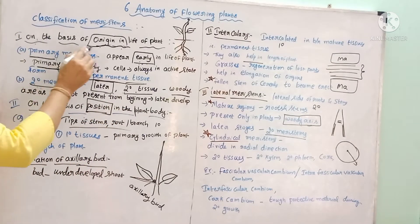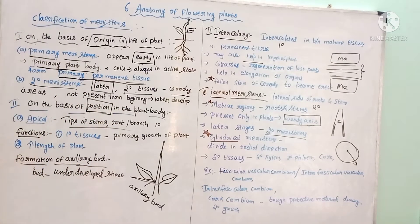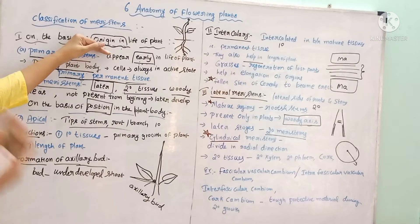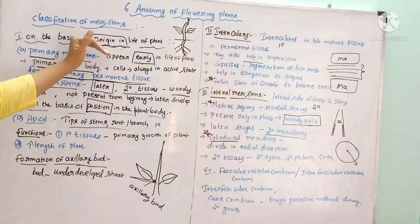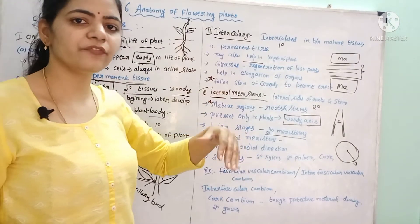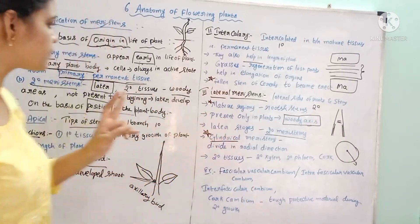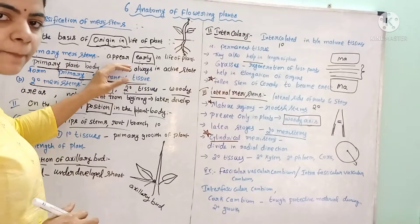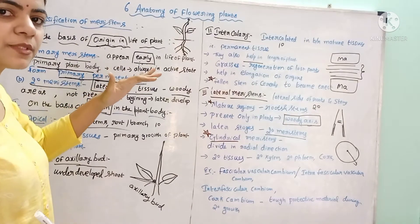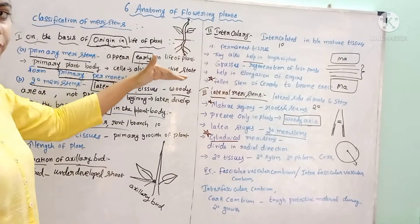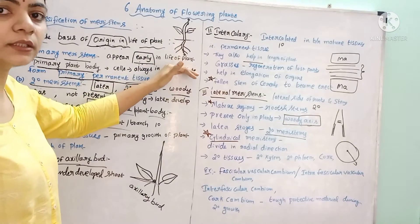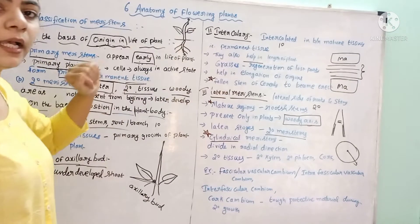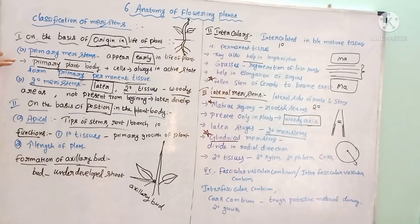The first reason is on the basis of origin in the life of the plant — when the meristematic tissue develops, whether it develops in the early stages of life or the latter stages. Based on this we have two types of meristems: one is the primary meristem and the second is the secondary meristem. The primary meristem develops early in the life of the plant, hence it is called the primary meristem.